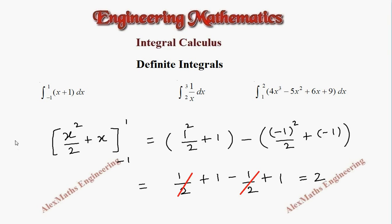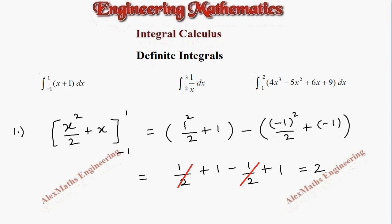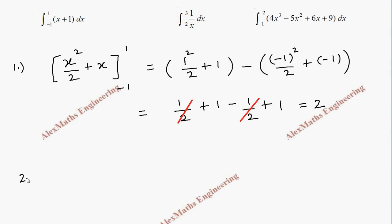Now coming to the second question, we have 1/x. Integration of 1/x is log x, so we get log x and the limit is from 2 to 3. When I substitute the upper limit we get log 3, minus the lower limit log 2. Using the log rule log m - log b is log(a/b), so the answer is log(3/2).